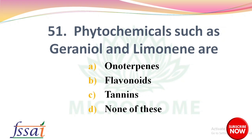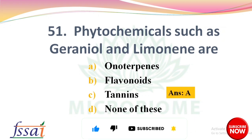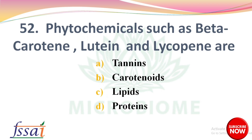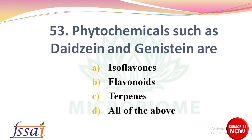Phytochemicals such as geraniol and limonin are — options: monoterpenes, flavonoids, tannins, none of these. The right answer: option A, monoterpenes. Next question: phytochemicals such as beta-carotene, lutein, and lycopene are — options: tannins, carotenoids, lipid, protein. The right answer: option B, carotenoids.